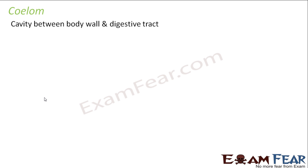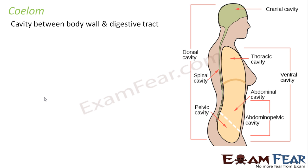Even other than the blood vessels, lymph vessels, and organs, there are some empty spaces in between. Those spaces are known as the cavity, or the coelom. It is basically between the body wall — the wall or surface of our body — and the digestive tract. The digestive tract starts from the mouth and ends at the anus. Any space between that tract and the body wall is known as coelom.